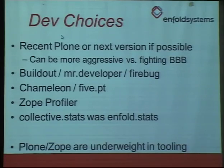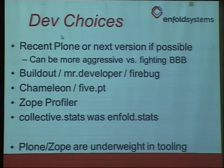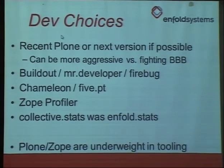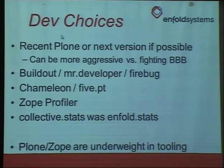Zope.profiler, wherever it lands, we have a fork of it sitting inside of PyPI — you guys can use it. collective.stats was in full stats but some people copied it, and it's sitting inside of PyPI. That's very important because what it does is, inside Firebug or server-side, you can see how many objects were loaded per request, how much of the cache missed, how many objects were stored, total time in traversal, and total time in the publisher.